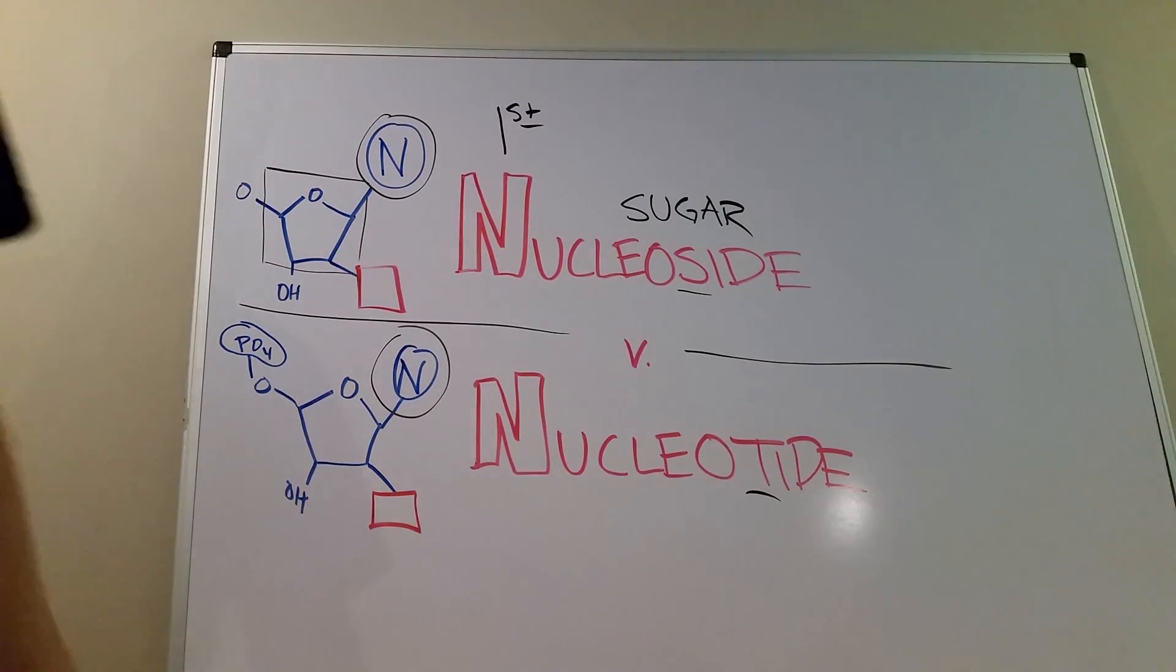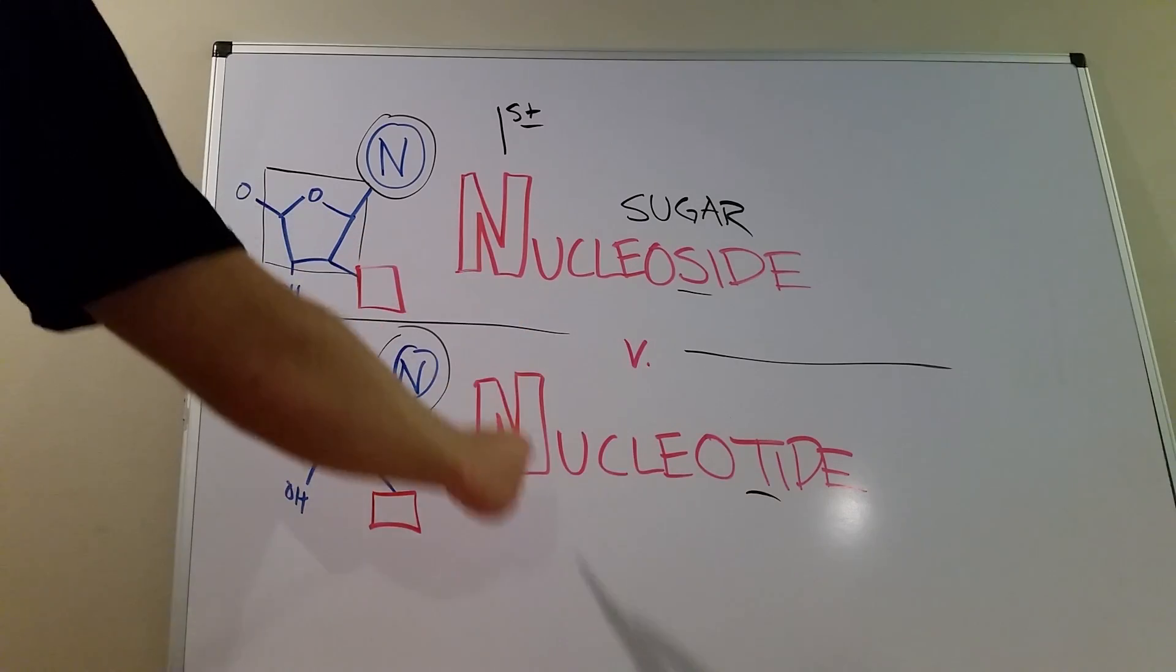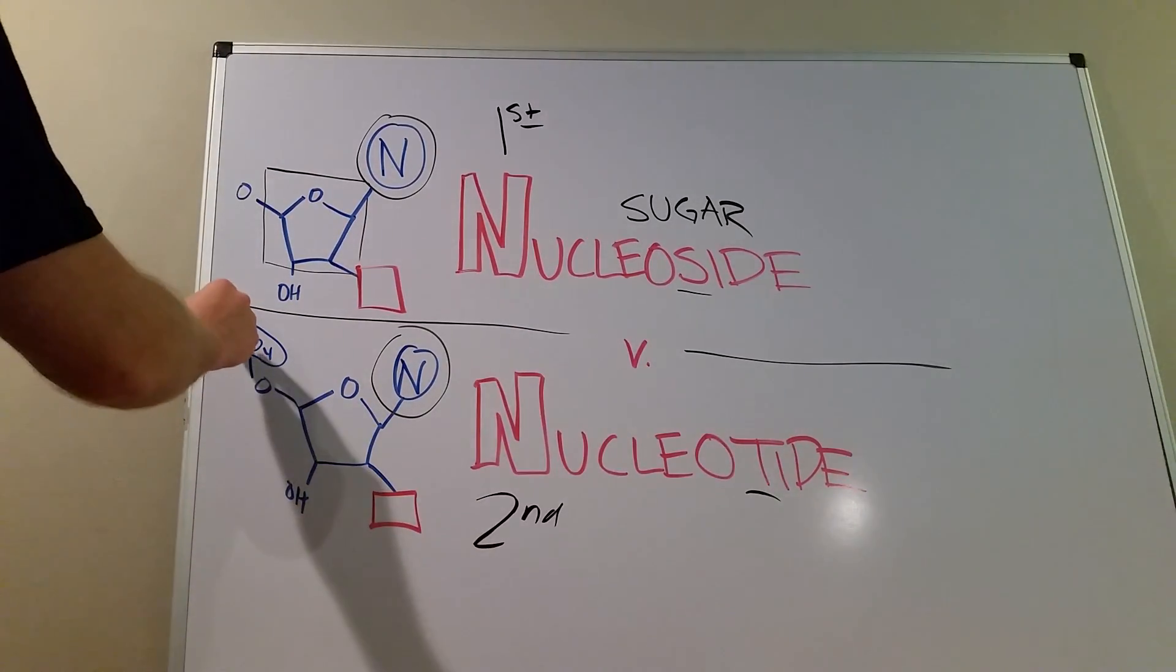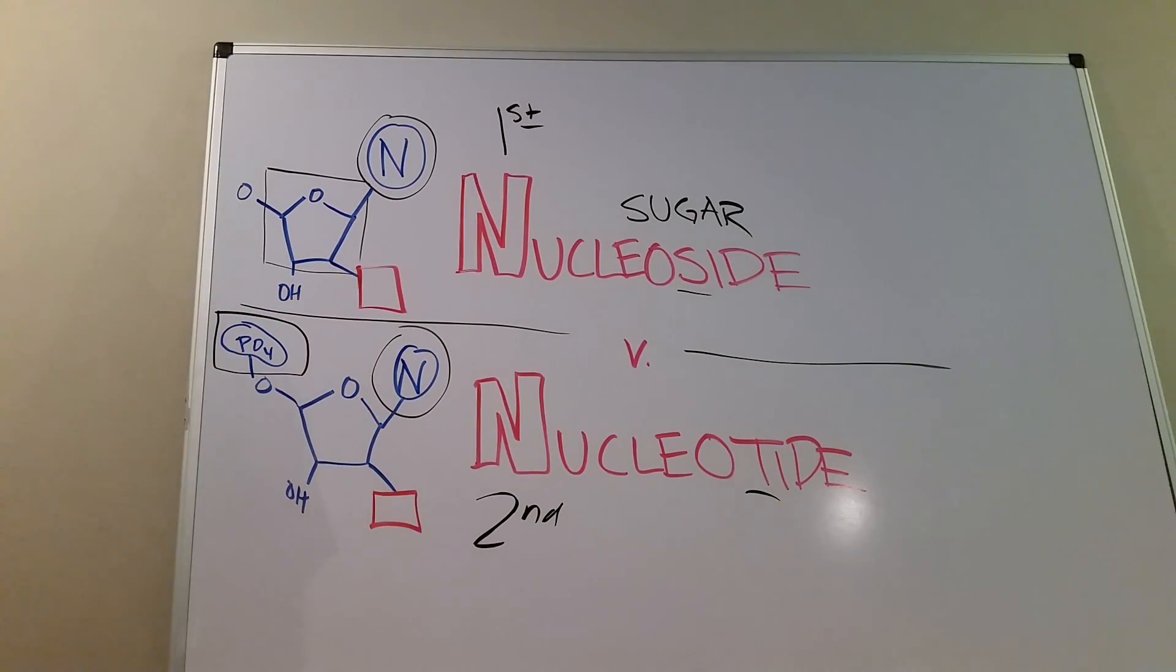A nucleotide has everything we just talked about in a nucleoside, so this would be like a second step afterwards. Except it also has the addition of this, PO4, which is a phosphate group.